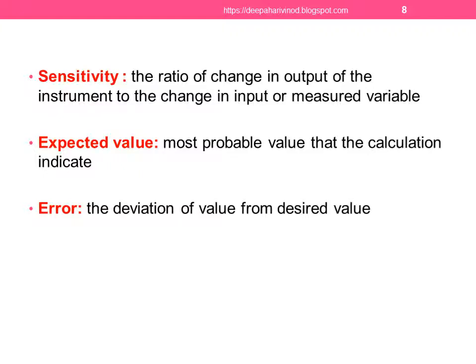Sensitivity is the ratio of change in output of the instrument to the change in input or measured variable. Change in output divided by change in input is the sensitivity. Expected value is the most probable value that calculation indicates. Error is the deviation of the value from the desired value.